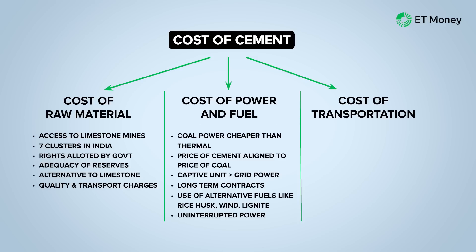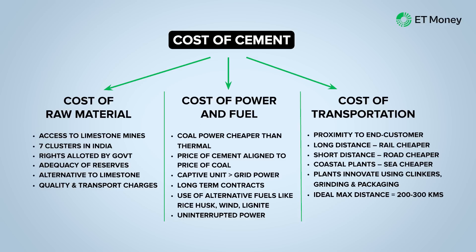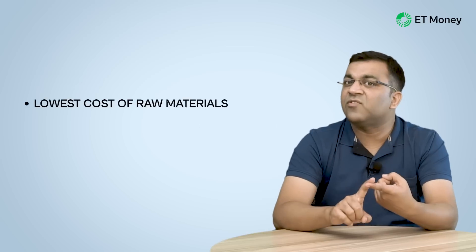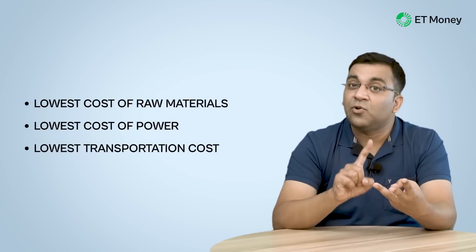The third cost element is transportation. Cement is a heavy commodity, and selling it far from the manufacturing center is never viable — which is why there is almost zero competition from imports in this sector. The ideal maximum distance from plant to consumption center should be within 300 kilometers for cost-effective operations. If you transform this thesis into a stock selection criterion, you are looking for a company with the lowest cost of raw materials, the lowest cost of power, and the lowest transportation cost.